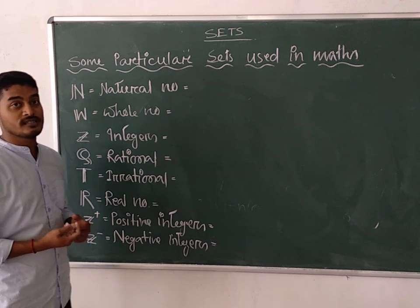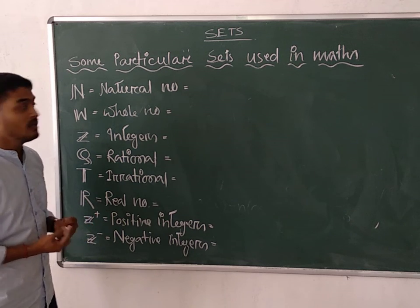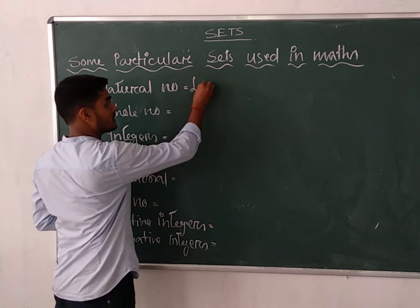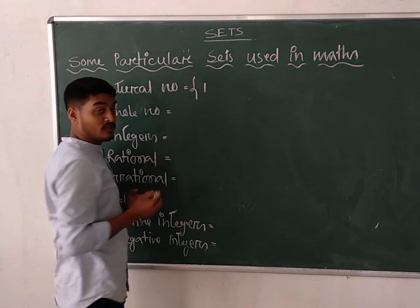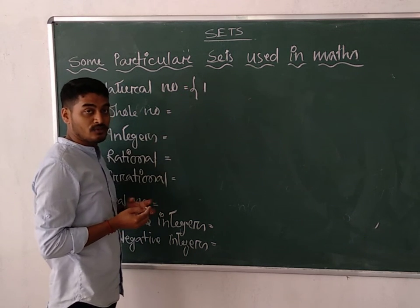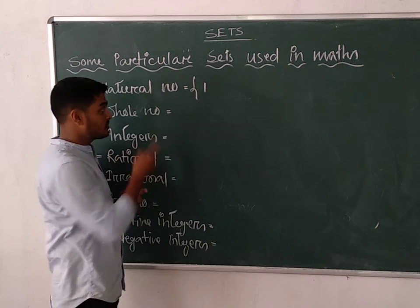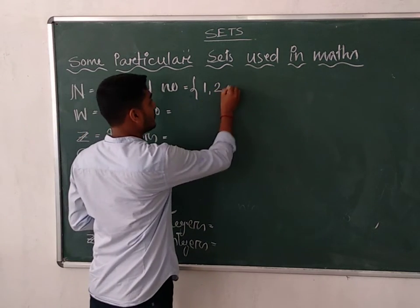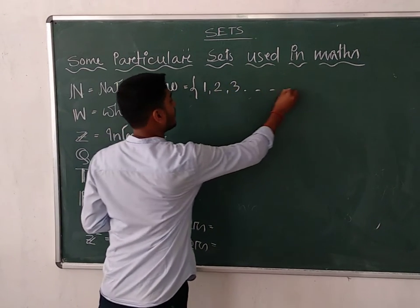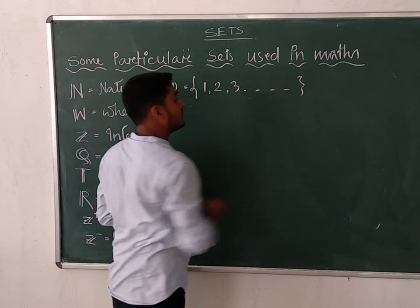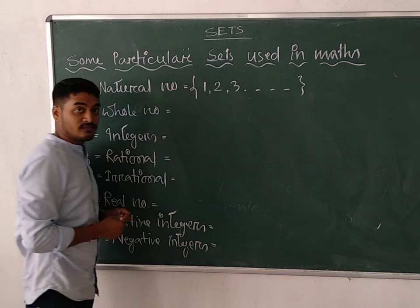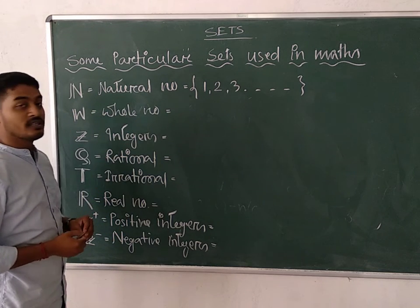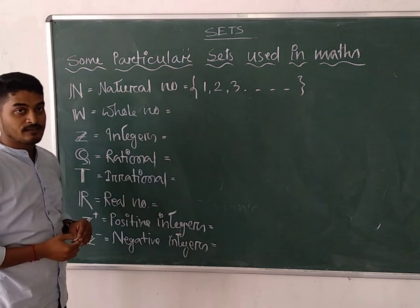Counting numbers are known as natural numbers. So what is the smallest counting number? Obviously, whenever we have to count, we start from 1. That's why 1 is the smallest counting number. We write 1, 2, 3 — an infinite number of counting numbers, starting from 1. This is the natural number set.